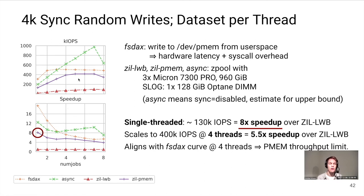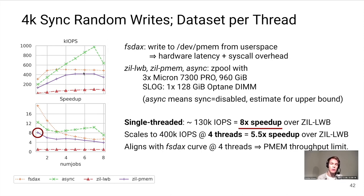For higher thread counts, zilpmem aligns with the fsdex curve, while the async curve shoots way higher. This means we are reaching the PMEM throughput limit, and with higher PMEM bandwidth we could achieve higher IOPS. I actually did that experiment in the thesis and reached about 900,000 IOPS with four interleaved Optane DIMMs.